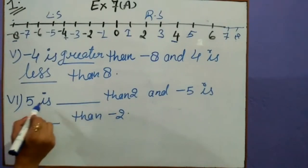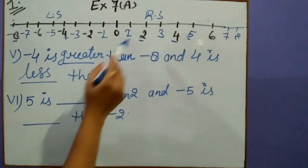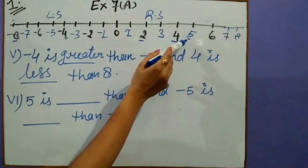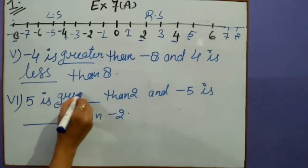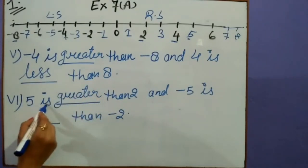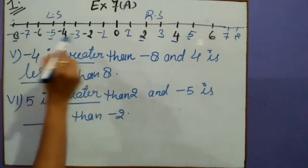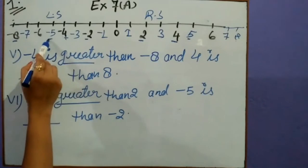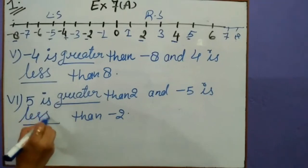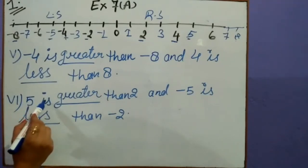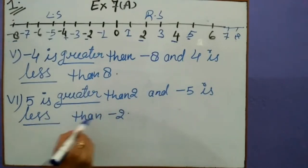Sixth one: 5 is blank than 2. 2 is here and 5 is here. 2 is less than 5, or 5 is greater than 2, so we write: greater. 5 is greater than 2. And minus 5 is blank than minus 2. We can see that minus 5 is less than minus 2, so we write: less. 5 is greater than 2 and minus 5 is less than minus 2.